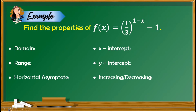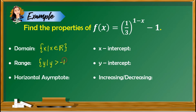The next example is to find the properties of f of x is equal to 1 third raised to the power of 1 minus x, minus 1, without the graph of this function. Based on the general properties, the domain is always the set of real numbers. As for the range, looking at the function, we have negative 1, which gives us the value of h. So the range is the set of y such that y is greater than negative 1.